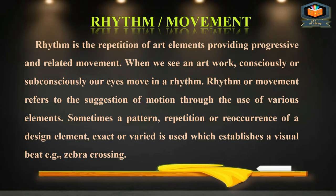The next principle is rhythm and movement. Rhythm is the repetition of art elements providing progressive and related movement. When we see an artwork, consciously or subconsciously, our eyes move in a rhythm. Rhythm or movement refers to the suggestion of motion through the use of various elements. Sometimes a pattern — a repetition or recurrence of a design element, exact or varied — is used, which establishes a visual beat. For example, a zebra crossing can be a pattern or repetition.